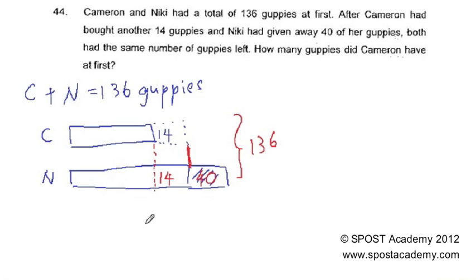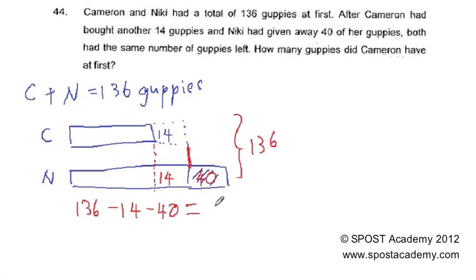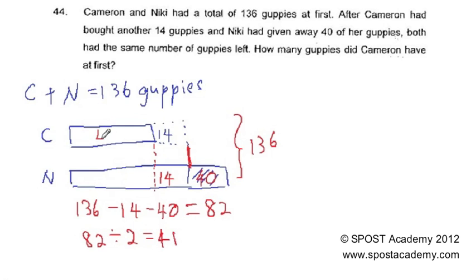From this model, what we can see is that we just need to use 136 minus 14 minus 40. That would give us 82. After which we just have to use 82 divided by 2 units. That would give us 41. Which means that this is 41 and this is 41.